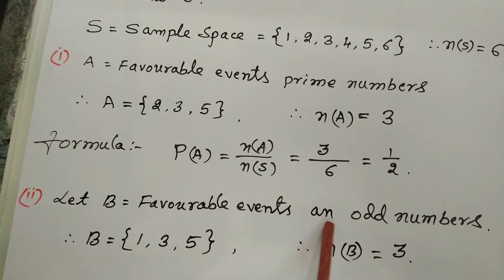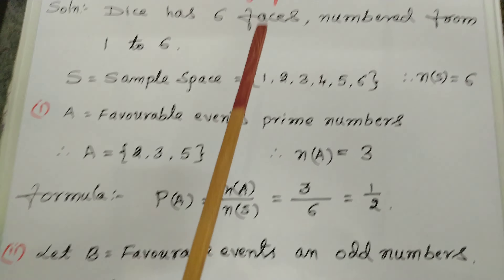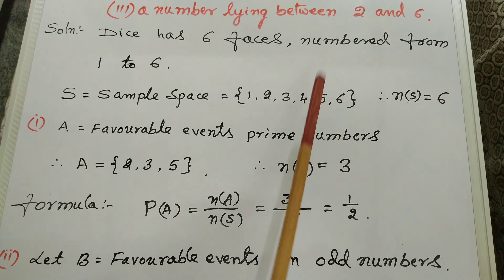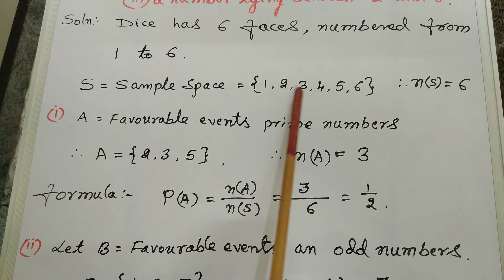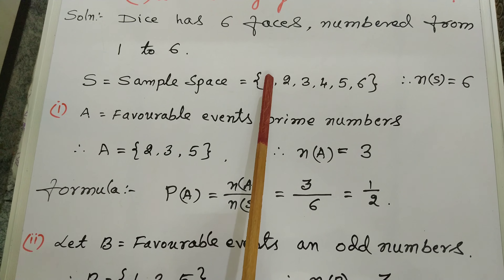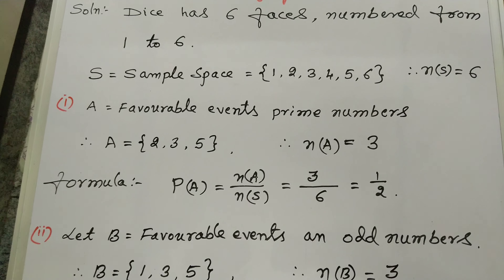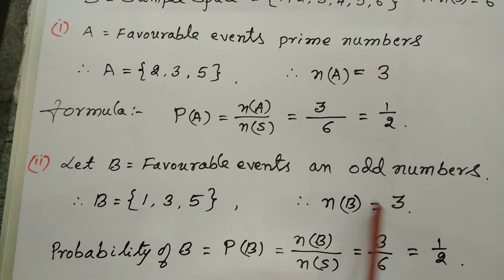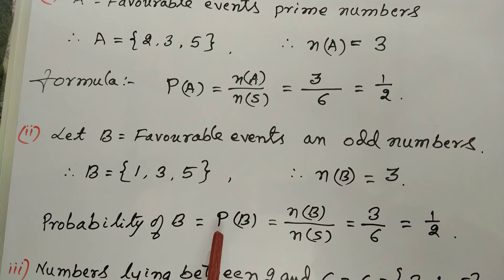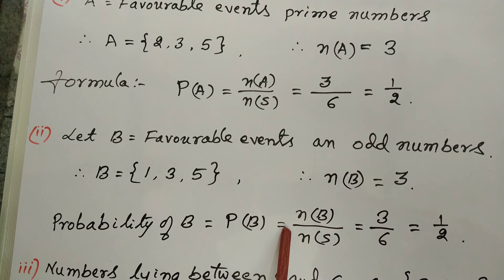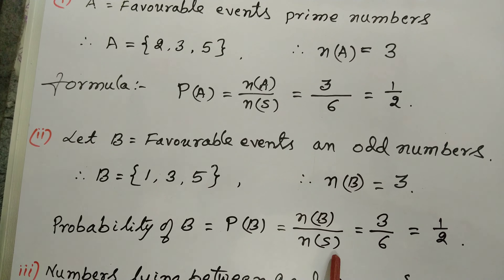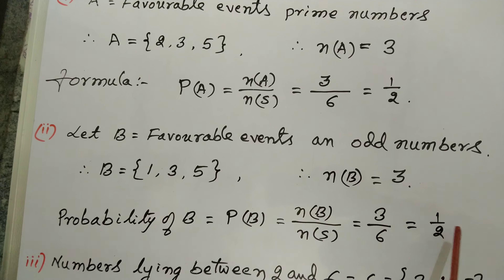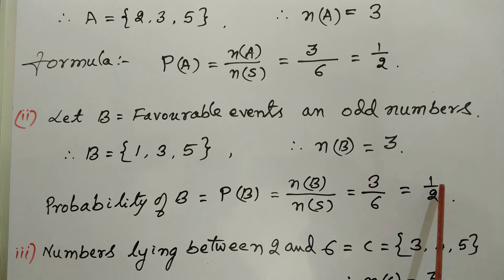Second: let B indicate favorable events for odd numbers. From these 6 outcomes, odd numbers are 1, 3, and 5; while 2, 4, 6 are even numbers. Therefore, B = {1, 3, 5}, total number of events in B = 3. Probability of B = n(B) / n(S) = 3 by 6 = 1 by 2.